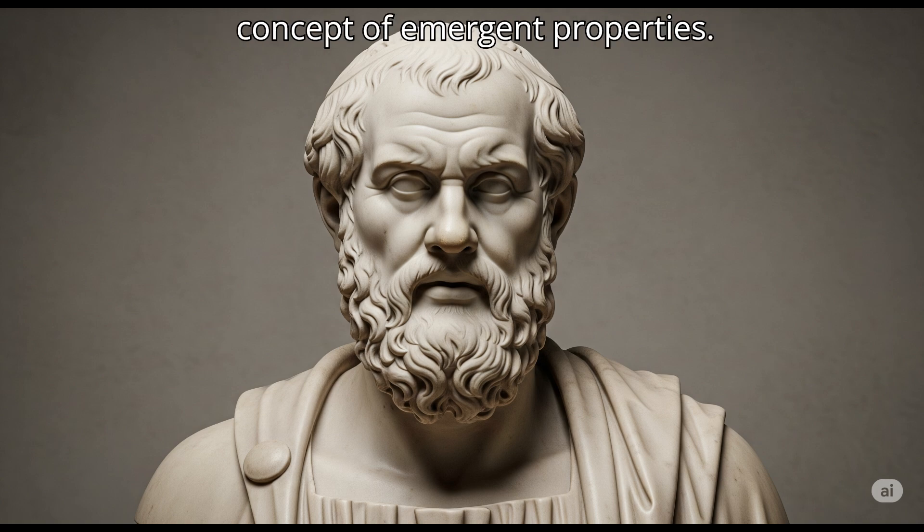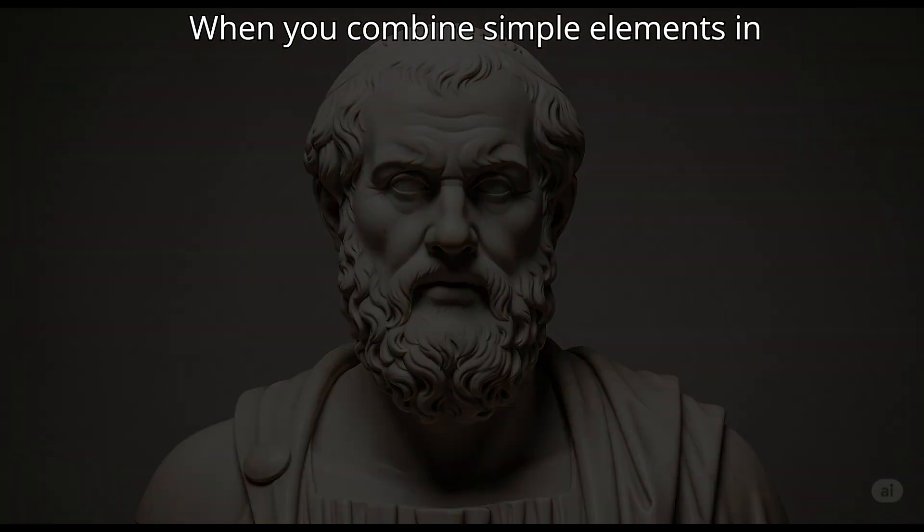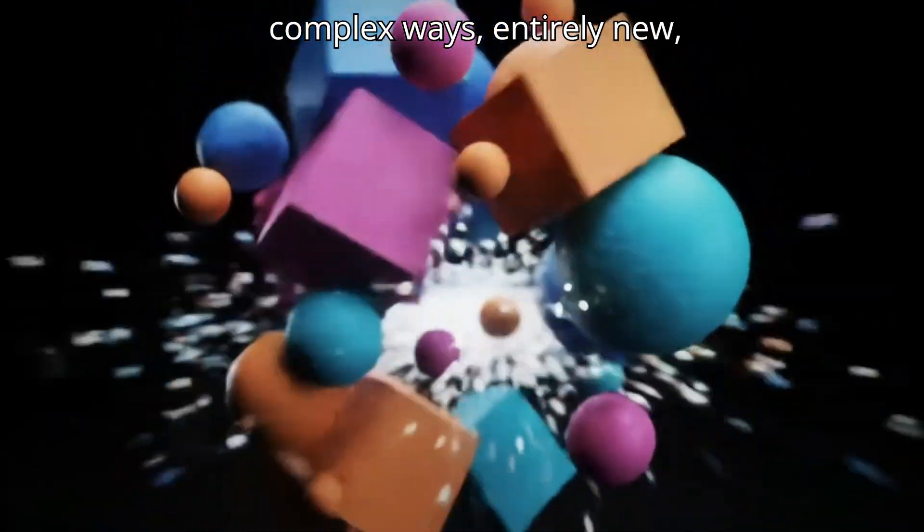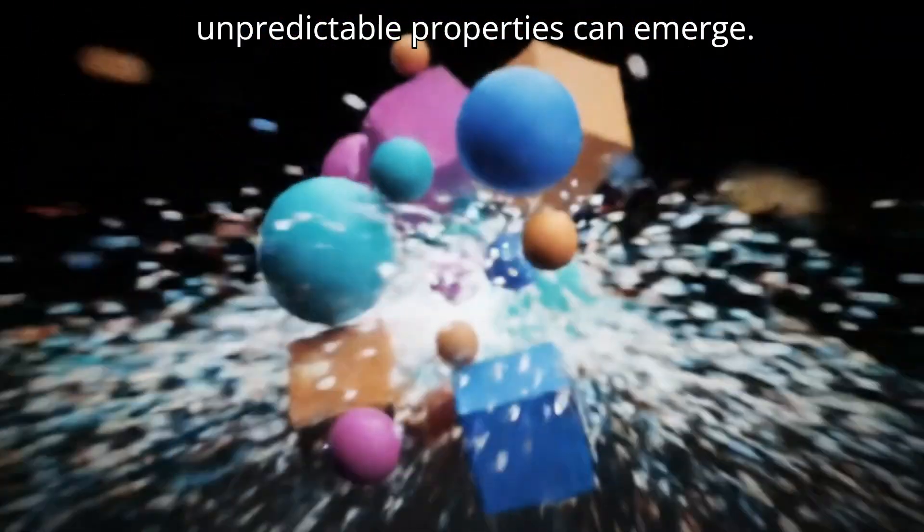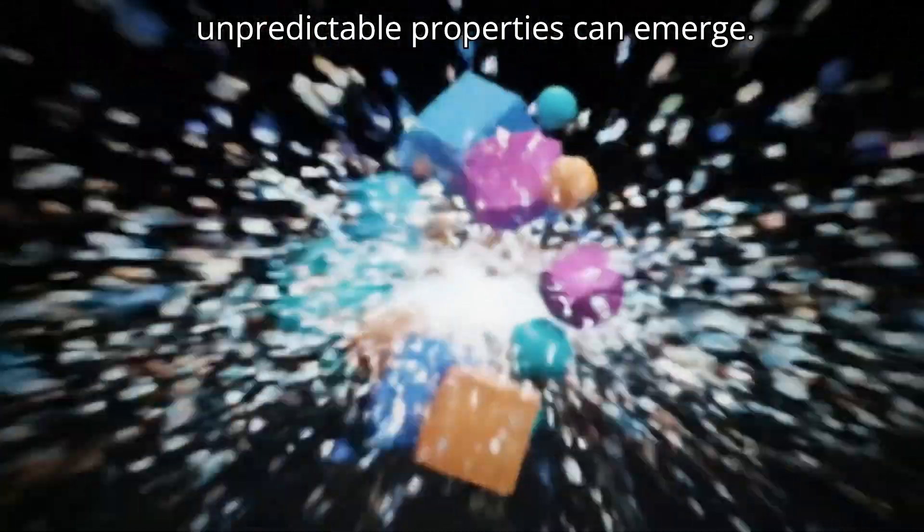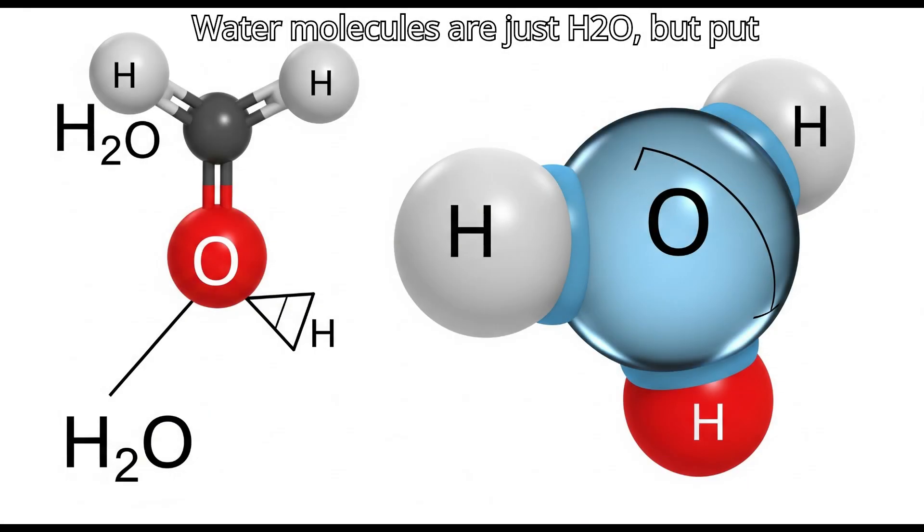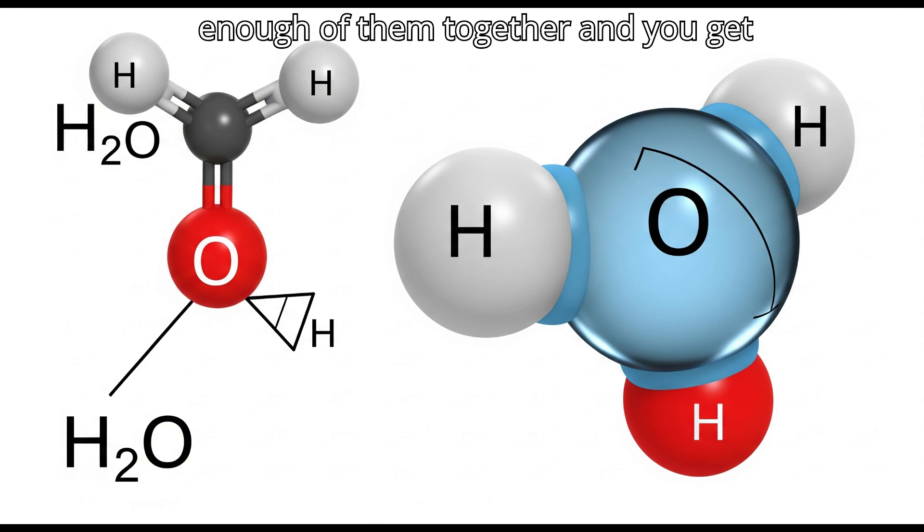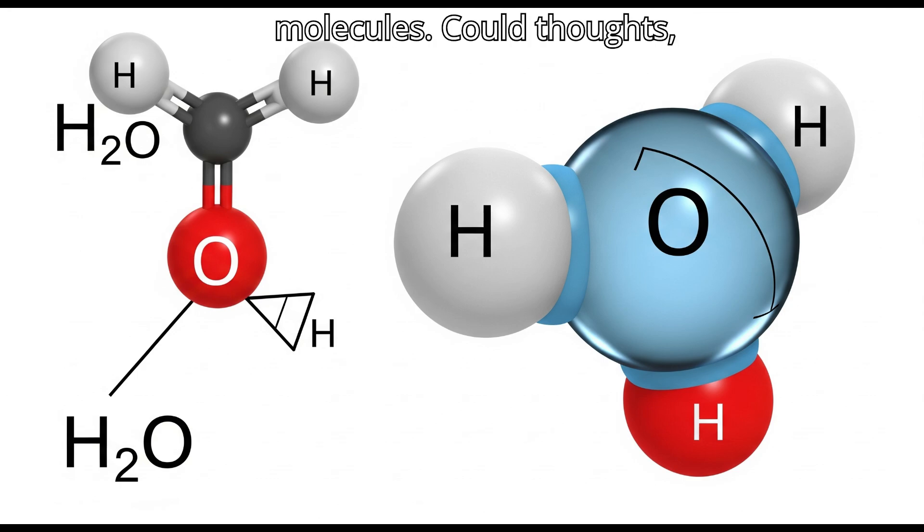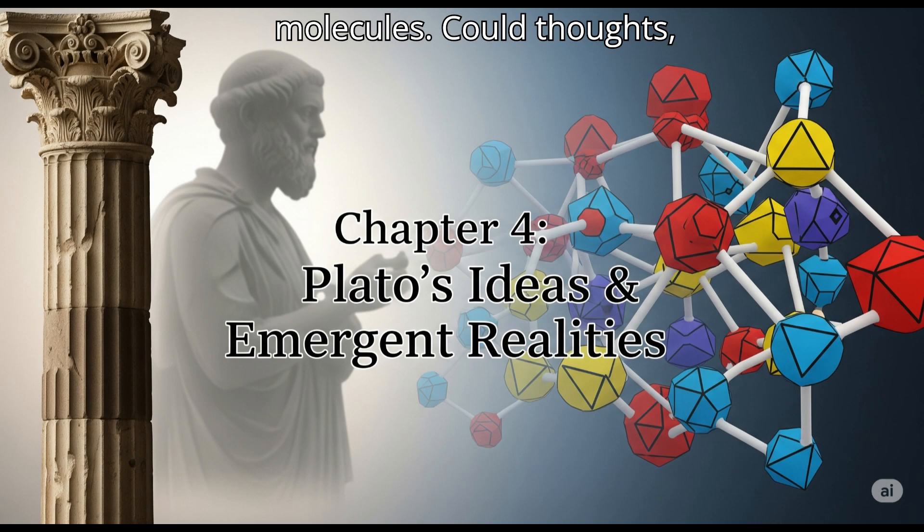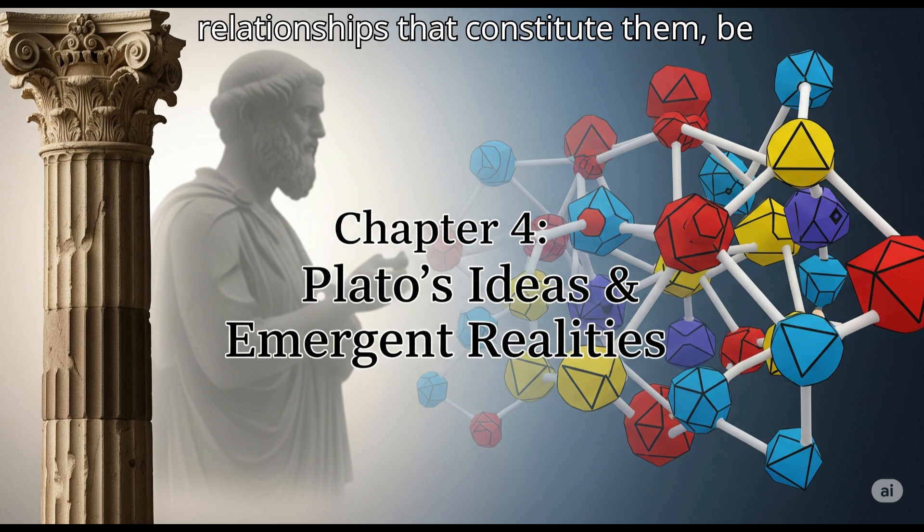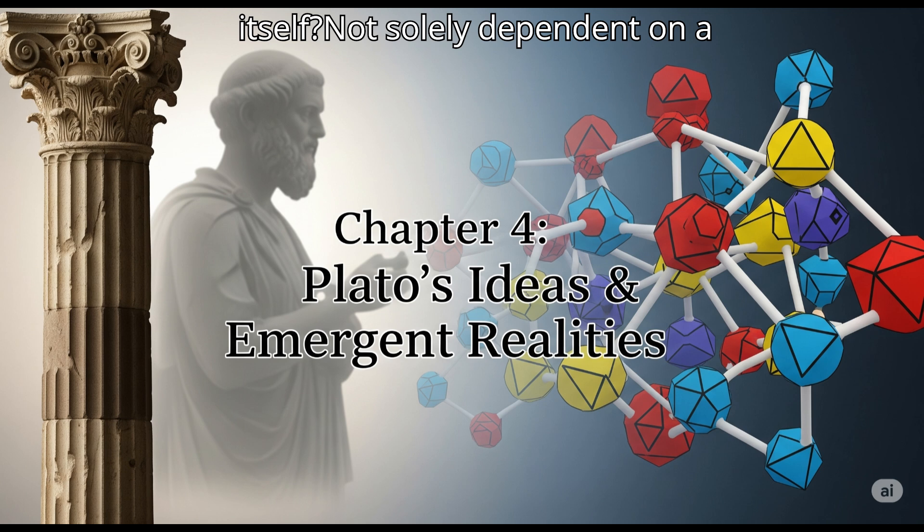Consider the concept of emergent properties. When you combine simple elements in complex ways, entirely new, unpredictable properties can emerge. Water molecules are just H2O, but put enough of them together and you get wetness, flow, surface tension. Properties not present in individual molecules. Could thoughts, or at least the patterns and relationships that constitute them, be emergent properties of the universe itself, not solely dependent on a biological brain?